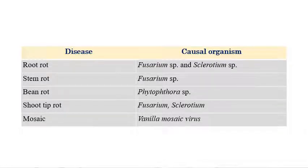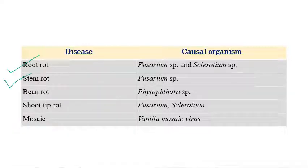These are the list of important diseases in vanilla: root rot, which is caused by Fusarium species as well as Sclerotium species; stem rot, caused by Fusarium species; bean rot, caused by Phytophthora species; shoot tip rot, which is caused by Fusarium and Sclerotium; and finally, mosaic, which is caused by Vanilla Mosaic Virus.